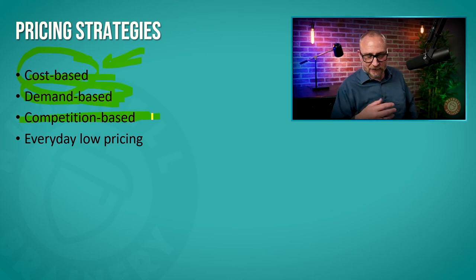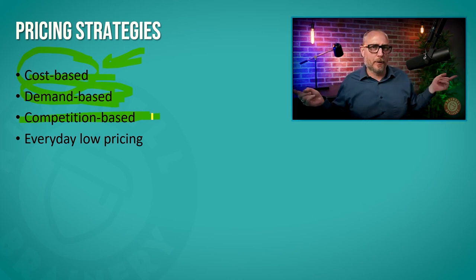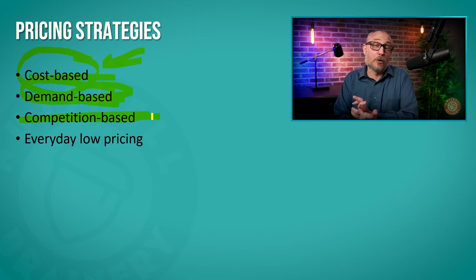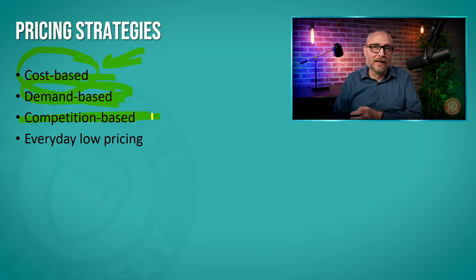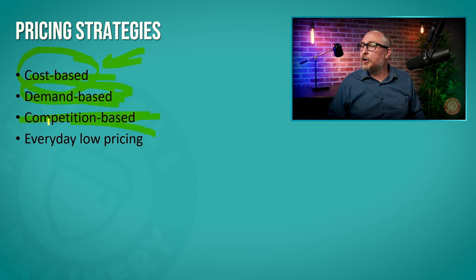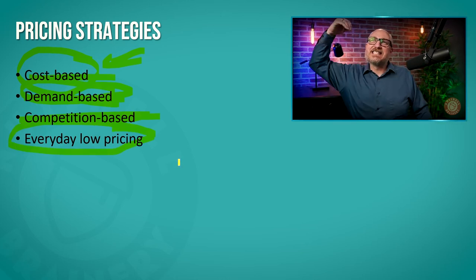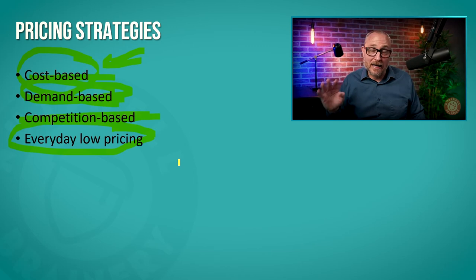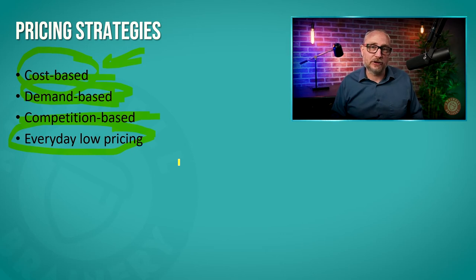Or you can go competition-based: what's going on with the competition? Where are they pricing it? If they're pricing it at $500, maybe I'll match it at $500, or go in at $499 to cut it just a little, or go $501 to say I'm a little different. Or you can just say we're going with everyday low pricing — figure out the absolute cheapest we can sell this thing for, and because we are the absolute cheapest, we'll sell the most and make money on volume.